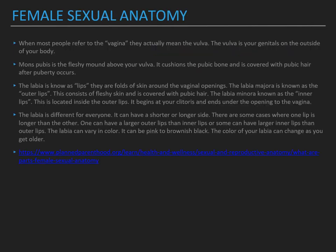Female sexual anatomy. Like in the video, it goes through all the points of the makeup of the female anatomy and where things are located. Here is more in-depth detail of what the female anatomy consists of, where it is located, and what some of it looks like. When most people refer to the vagina, they actually mean the vulva. The vulva is your genitals on the outside of your body. The mons pubis is the fleshy mound above your vulva — it cushions the pubic bone and is covered with pubic hair after puberty. The labia, also known as lips, are folds of skin around the vaginal opening.